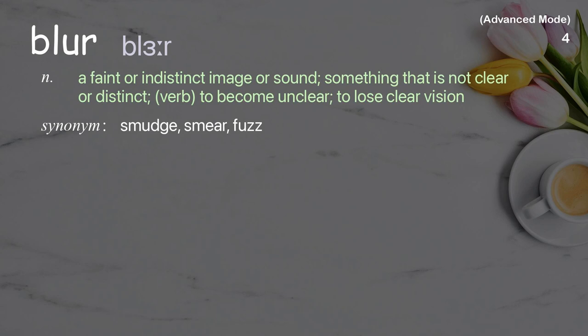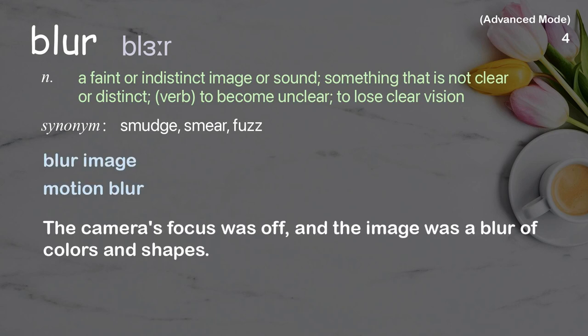Blur: a faint or indistinct image or sound; something that is not clear or distinct. Verb: to become unclear, to lose clear vision. Examples: blur image, motion blur. The camera's focus was off and the image was a blur of colors and shapes.